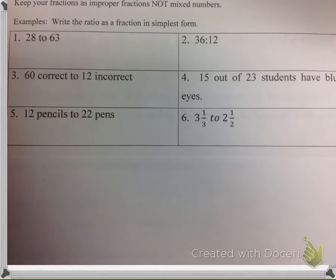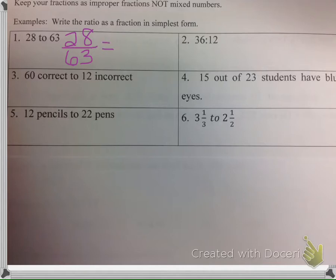For the next few examples, we're going to write the ratio as fractions in simplest form. For number 1, I have 28 over 63. That would not be simplified — you need to simplify that. What goes into 28 and 63? 7. So 7 goes into 28 four times, and 7 goes into 63 nine times. That would be 4 ninths.